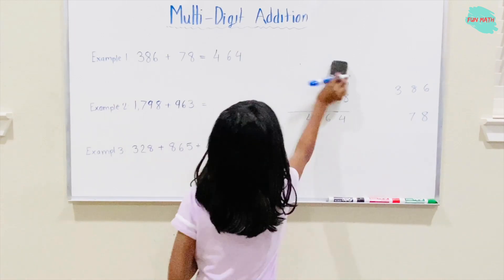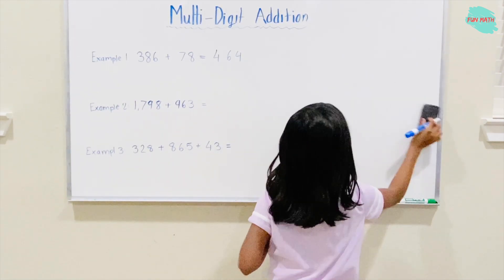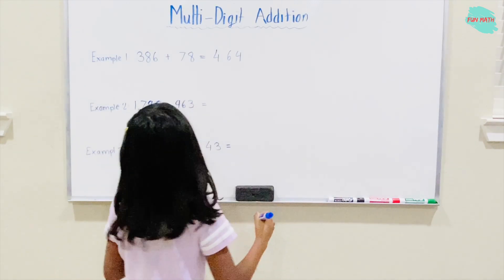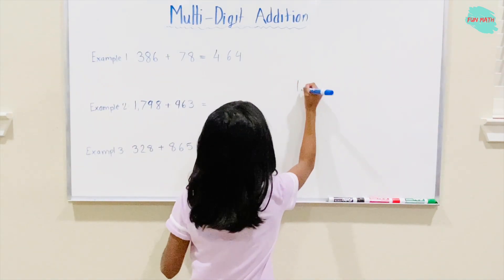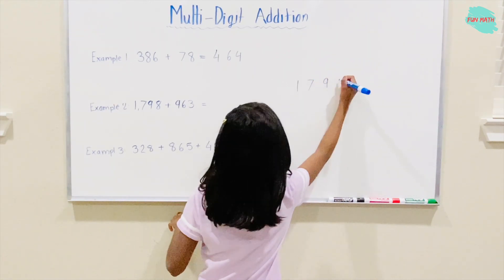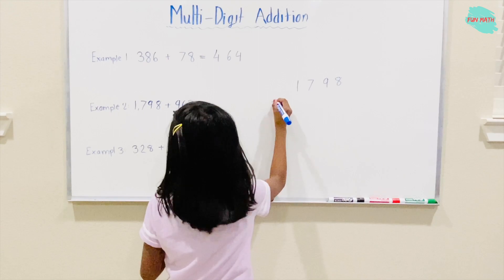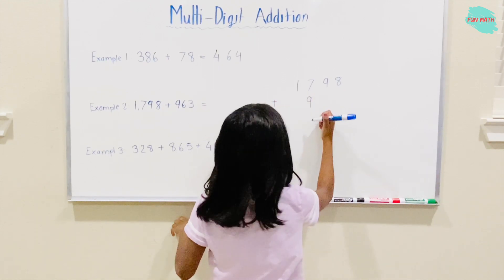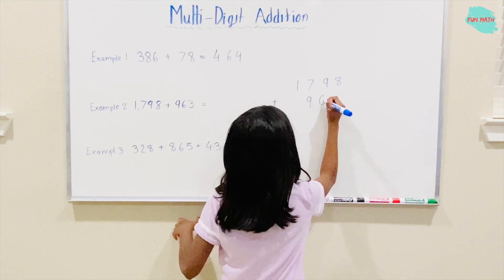Okay. Let's move on to Example 2. So 1,798 plus 963.